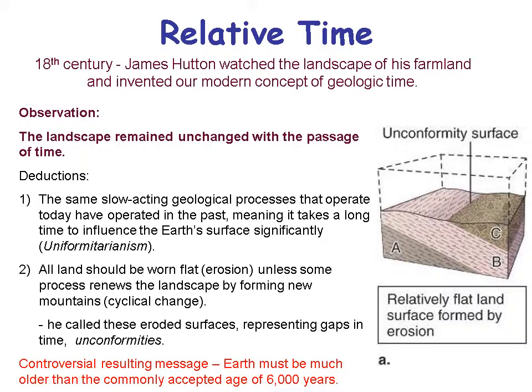In the 18th century, James Hutton watched the landscape of his farmland and invented our modern concept of geologic time. His observation was that the landscape remained unchanged with the passage of time. His deduction was that the same slow-acting geologic processes that operate today have operated in the past — meaning it takes a long time to significantly influence the Earth's form. We call that uniformitarianism. That doesn't mean catastrophes don't happen, but they're not the primary agent of what we see in Earth history.